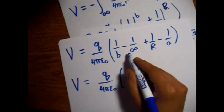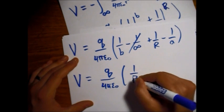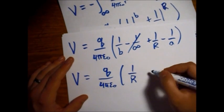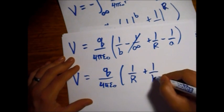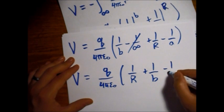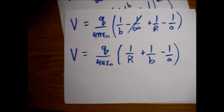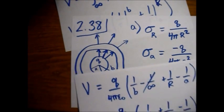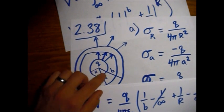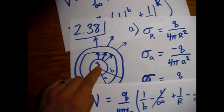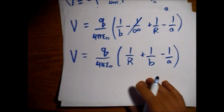The 1/∞ term goes to zero, so the potential at the center — or at any point inside the inner sphere — is Q over 4π ε₀ times (1/R − 1/A + 1/B). The conductor is an equipotential, so this holds throughout the inner sphere.